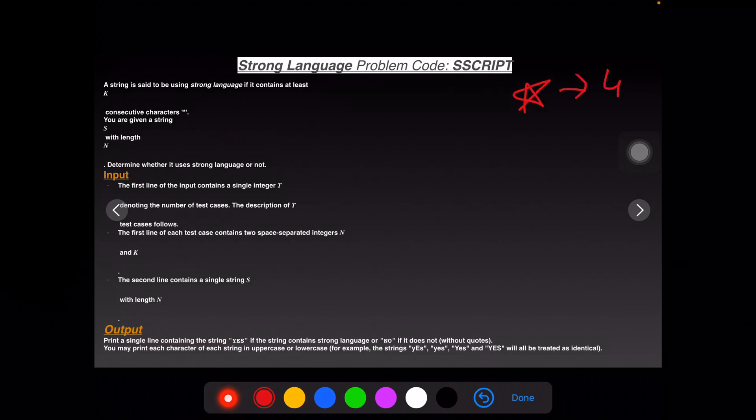You're given a string s with a length n, and we have to determine whether it is a strong language or not. So if it is a strong language, it will have at least k consecutive star characters in this given string.